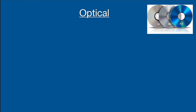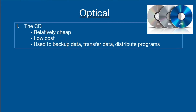Within optical storage, there are three different types of disks that you are probably already familiar with. The first is the CD, which in the past you may have used to store music. This is because it's relatively cheap and has a low capacity, so is used to backup data, transfer data like music, and distribute programs.